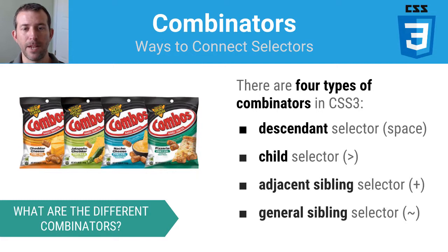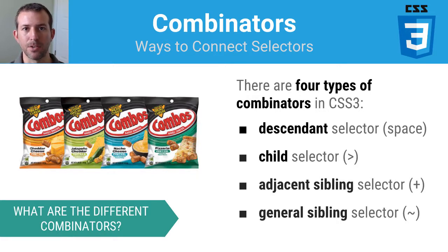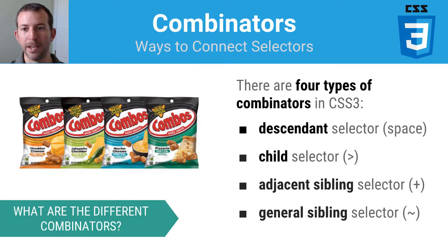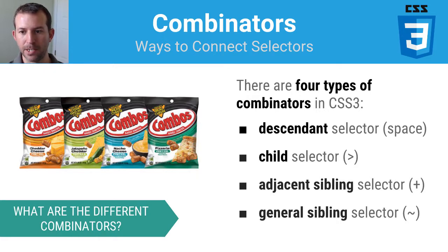A slightly more advanced technique is combinators. You can combine the different types of CSS selectors in creative ways to create very fine-grained, powerful, specific new style rules. There are four different types of combinators: descendant, child, adjacent sibling, and general sibling. Each one has its symbol — the descendant is a space, child is the greater-than sign, adjacent is the plus, and general sibling is the tilde.